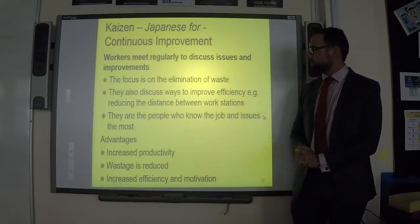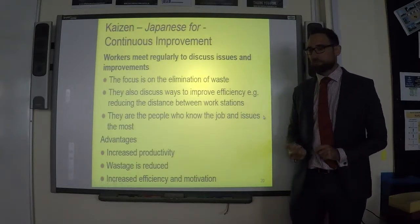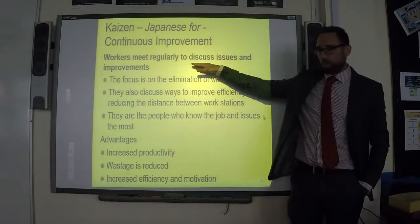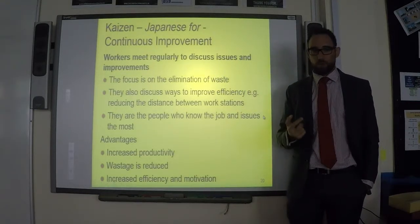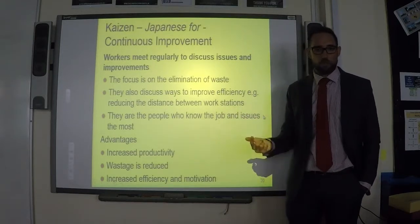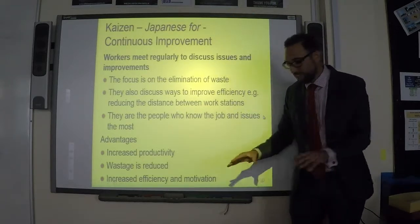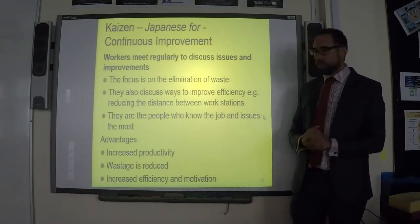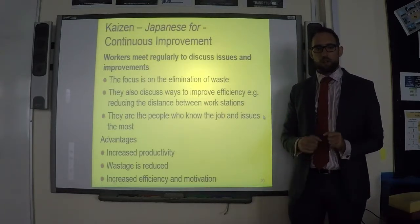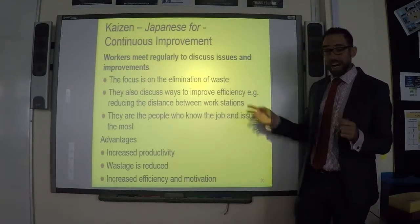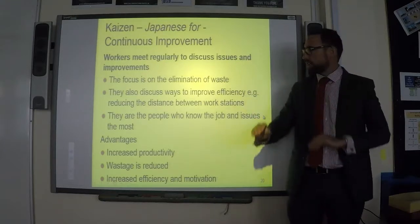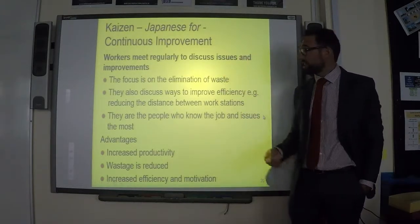In order to have Kaizen and continuous improvement, you need to meet with your workers. The people who can tell you how to be more efficient are the people doing the jobs themselves. Many people think it's managers who are responsible for efficiency, but managers are in their offices and don't really know what's happening on the floor. If you want to be truly efficient, ask your workers: 'What do you think we could do better? What's causing you problems?' They might say, 'I have to walk a long way from one machine to the next — can we bring the machines together?' Speaking to workers will give you solutions, and this is part of Kaizen.